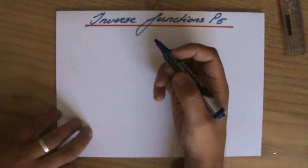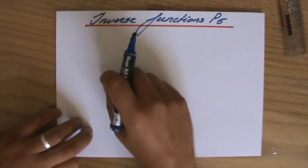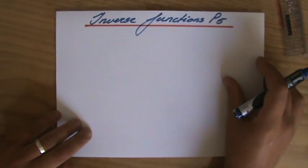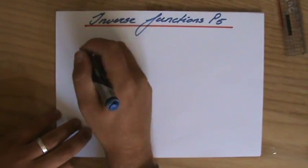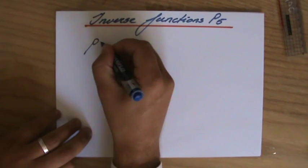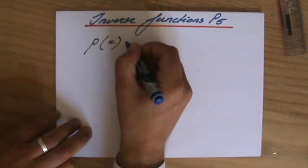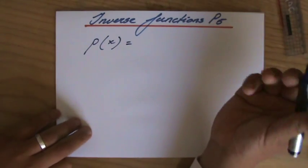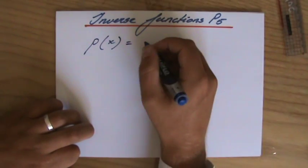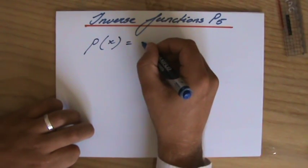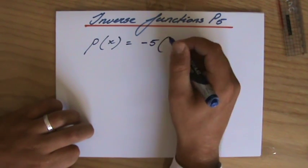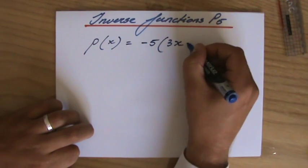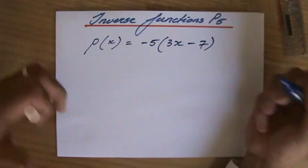All right, last example of inverse functions, part 5. Make sure you have seen the previous parts. Let's say we have a function P(x), where x is the variable. What shall we do? I'm just making up a function: minus 5(3x - 7).